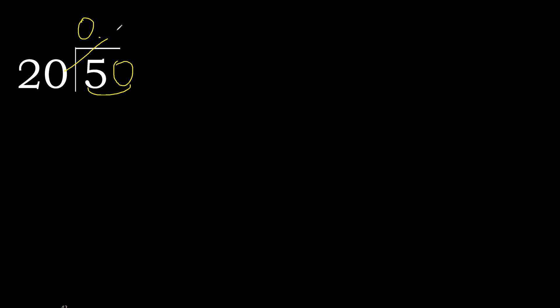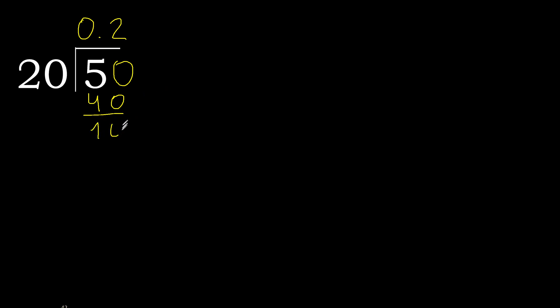20 multiplied by which number is nearest to 50, but not greater? 20 multiplied by 3 is 60 — 60 is greater. 20 multiplied by 2 is 40 — is not greater. Subtract: 10.